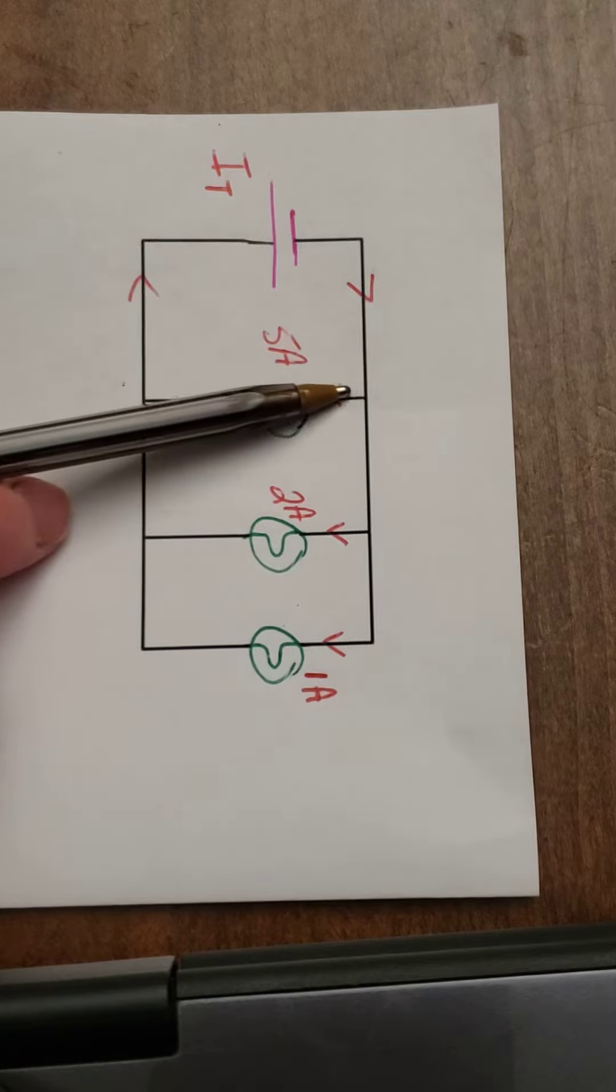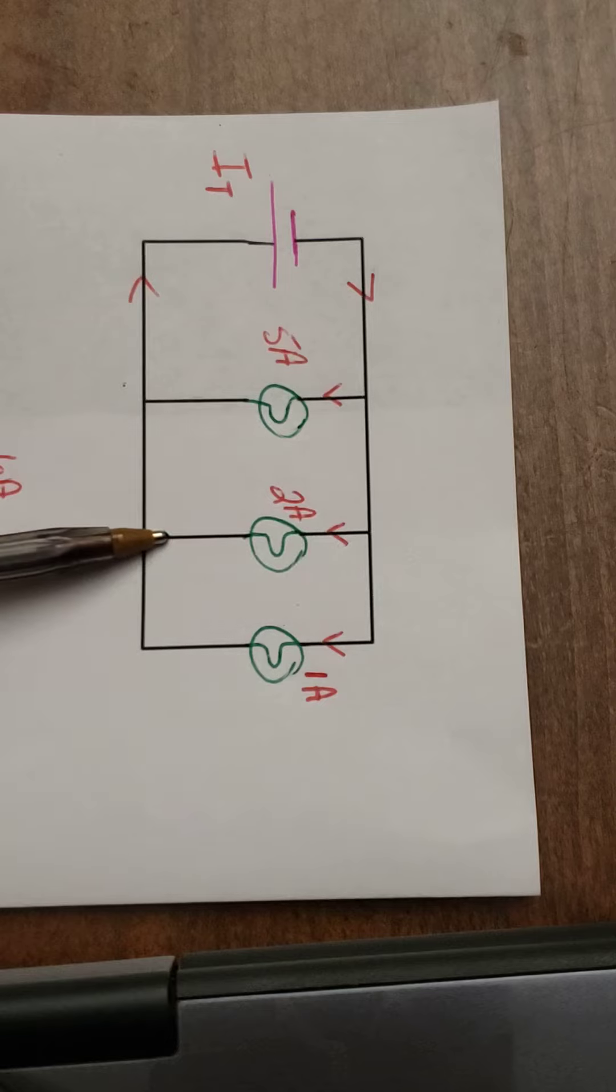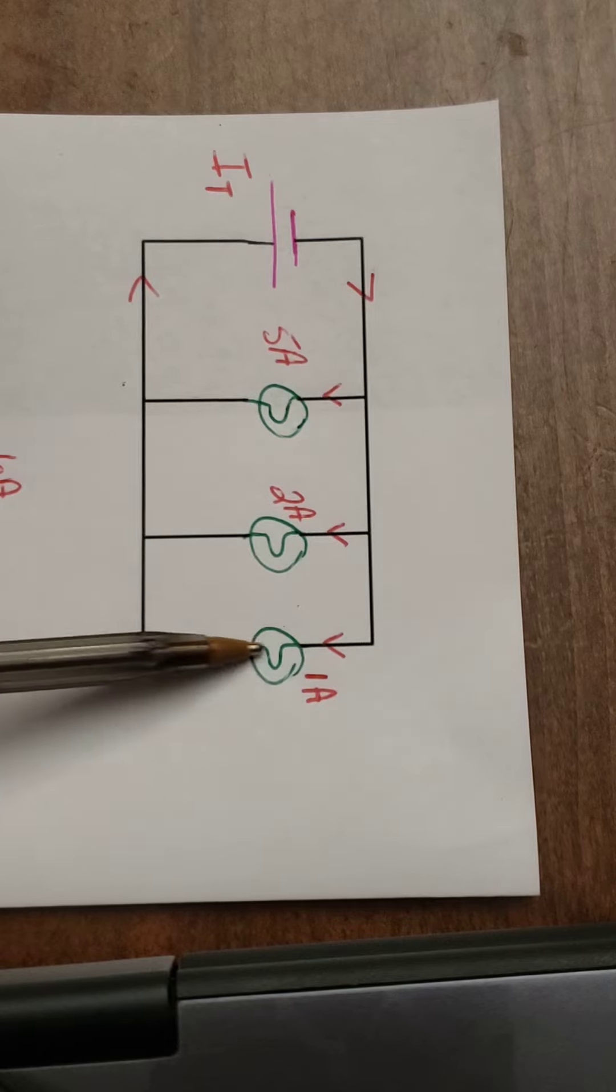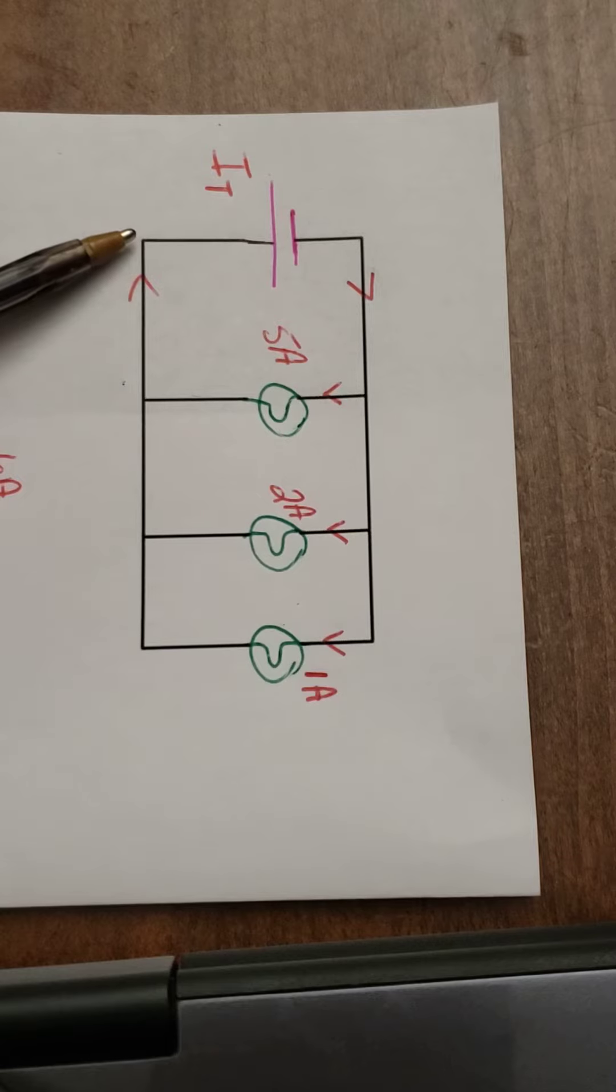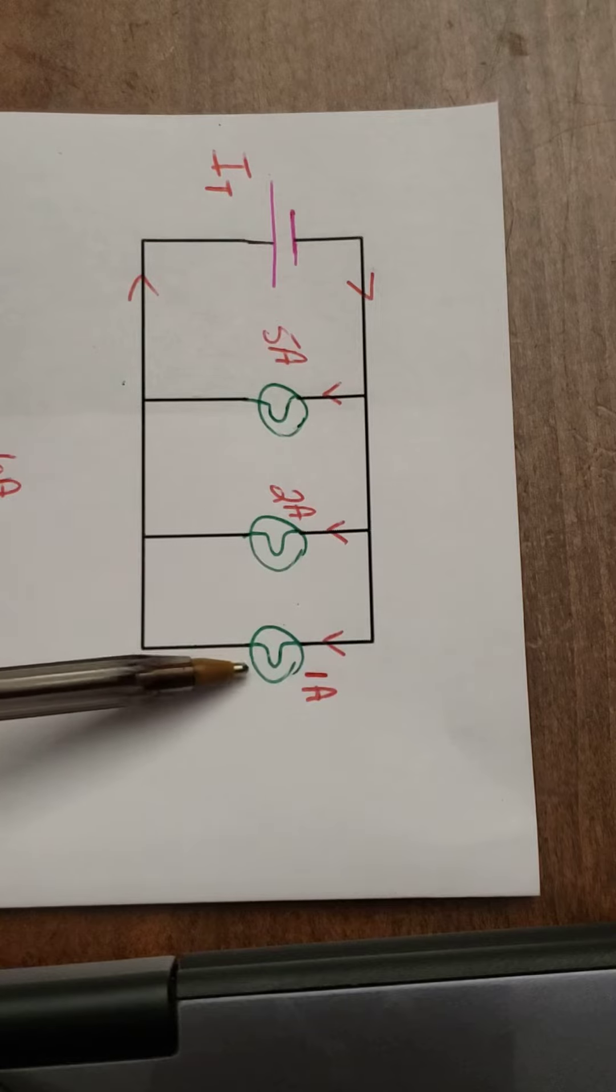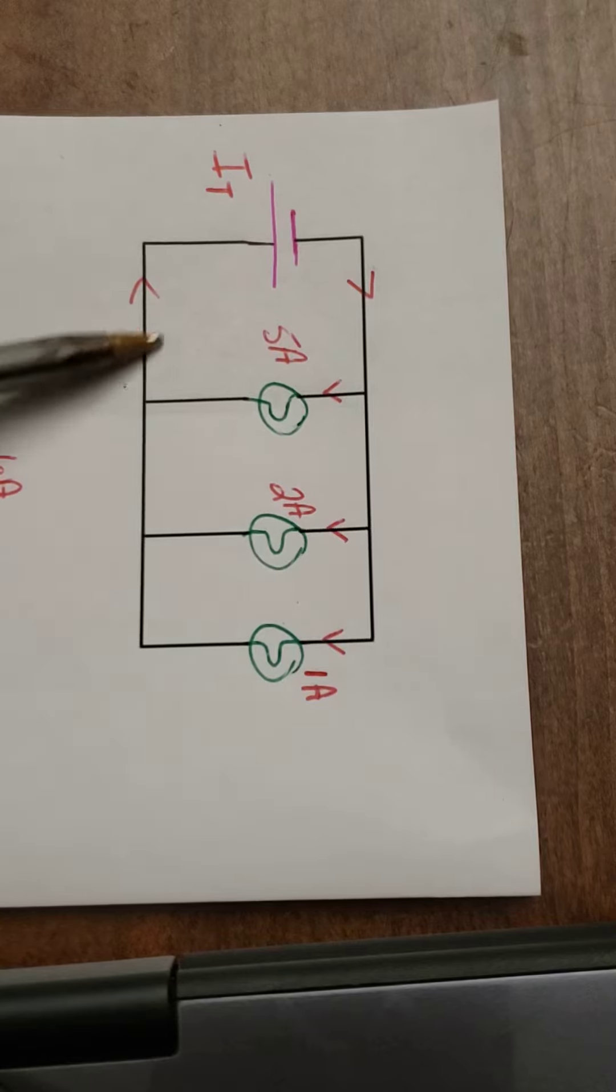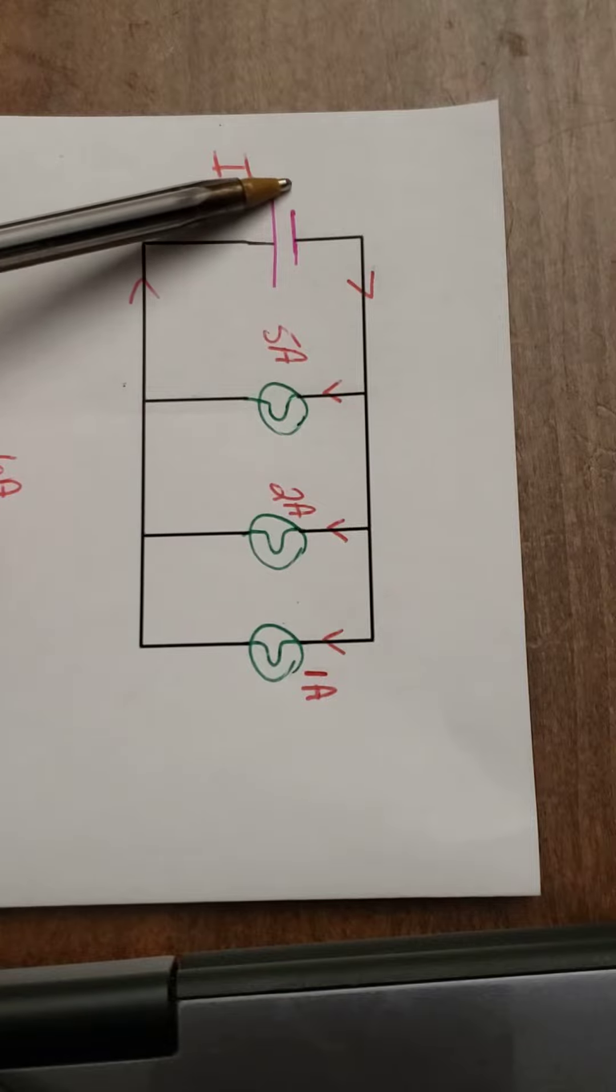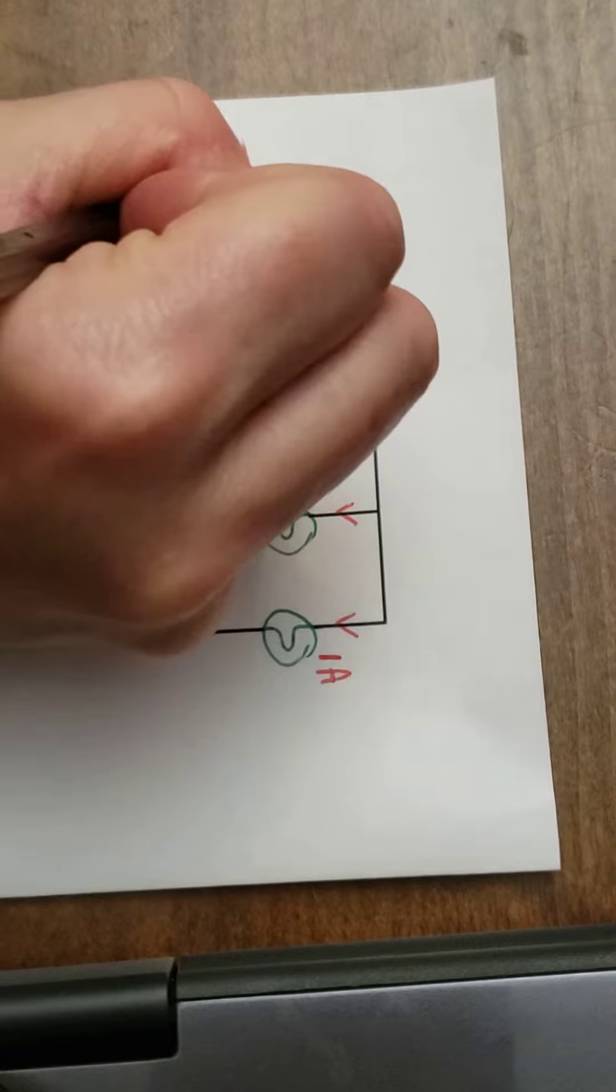But I do know that 5 amps went down this branch or path, 2 amps went down this path, and 1 amp went down this path. So current again is a package of electrons. So 5 packages plus 2 packages plus 1 package will give me 8 packages of electrons, which will meet up about here and go through the battery. So the answer is 8 amps.